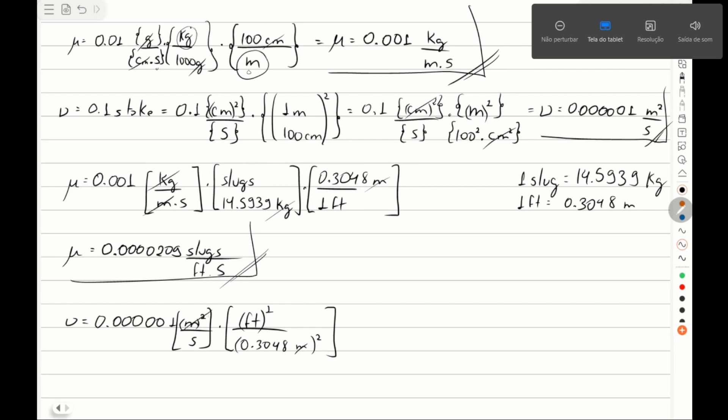So we can cancel this. We result in feet squared per second. So kinematic viscosity equals 0.00001076 feet squared per second.